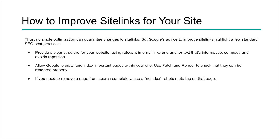The first is to have a clear structure to your website. Use relevant internal linking with good, informative anchor text that makes sense for the user. You also want to make sure you allow Google to crawl and index important pages — use fetch and render to check that your pages are being rendered. And if you've got pages that aren't really important, like your privacy policy page, use no-index. Those don't need to show up in search results and aren't going to help move users through your content.